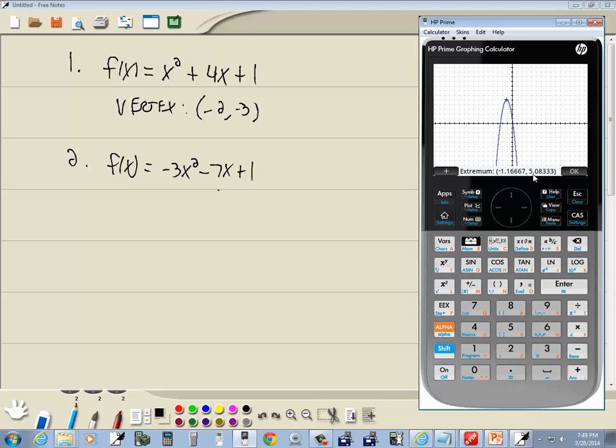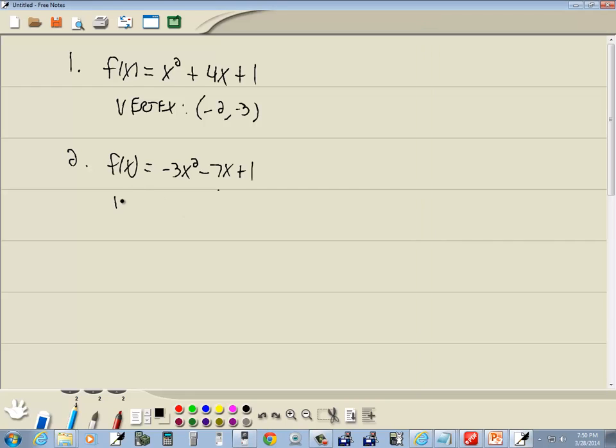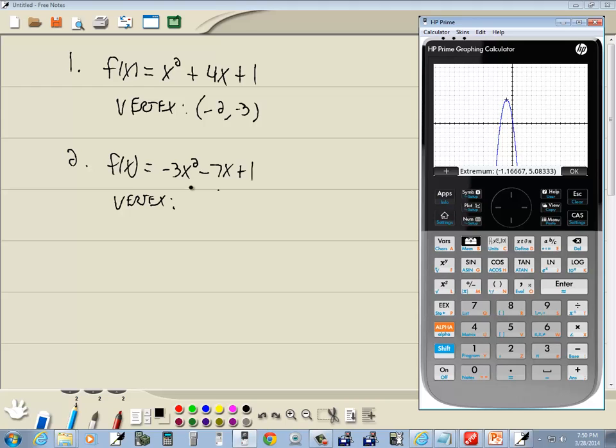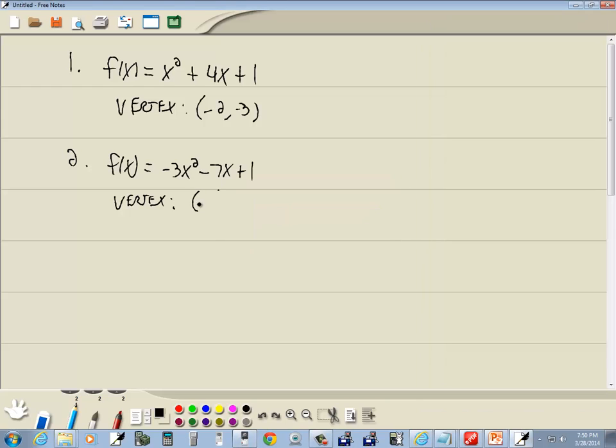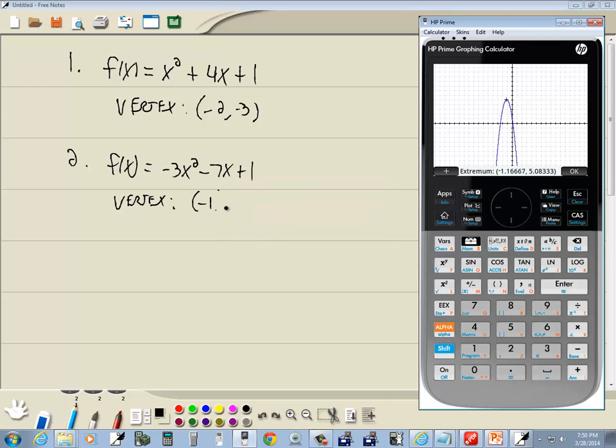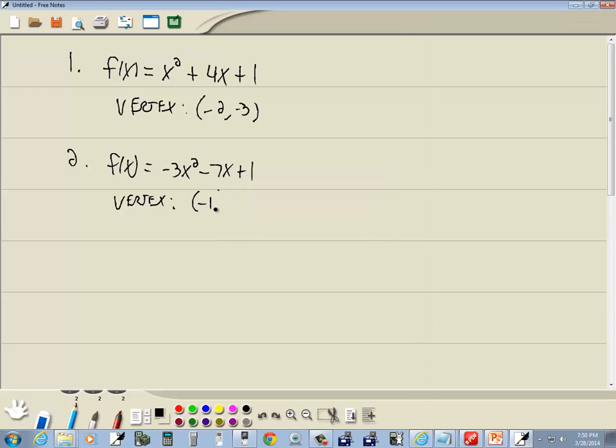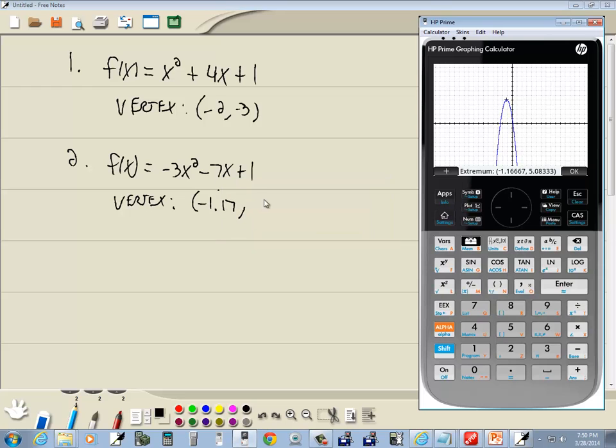Well, that's decimals, and that's no good. Let me jot down what that is. So our vertex is, I'll take it two decimal places: (-1.17, 5.08).